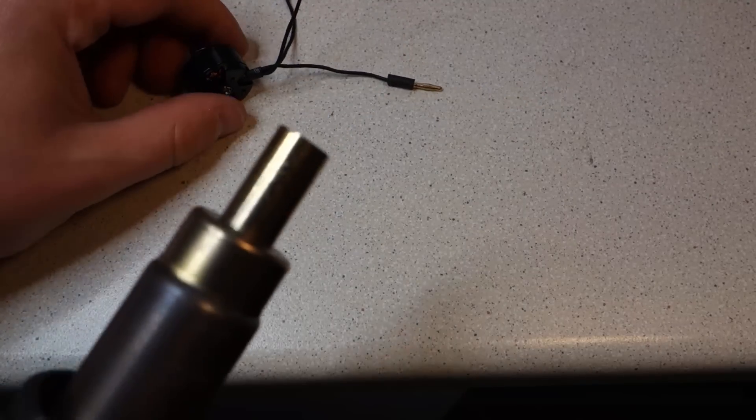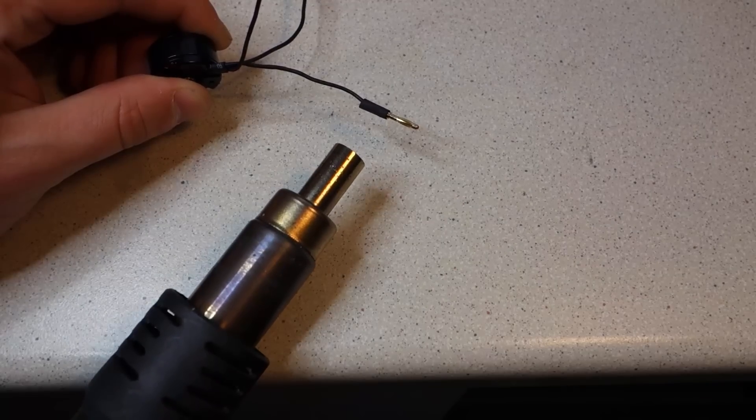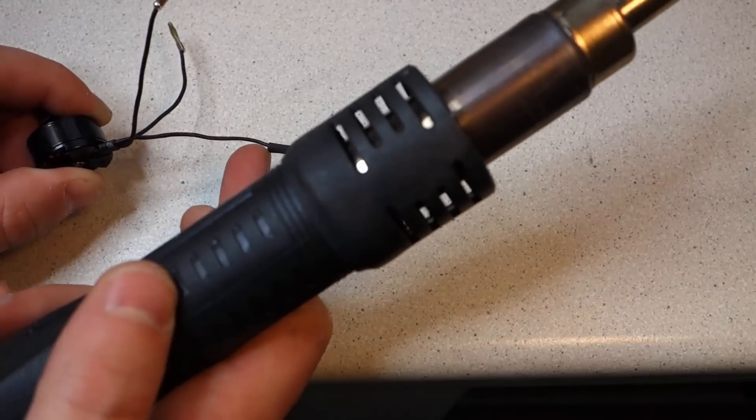Use a heat gun or a hair dryer to heat up the heat shrink. It won't take much before it starts shrinking. Try to apply the heat evenly and not too directly or else it'll start to bubble.